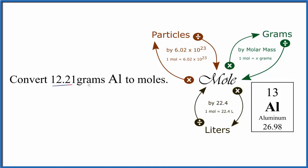We have 12.21 grams of aluminum. This is just a number I made up for the problem. We want to get that to moles. So when we have grams, we'll go from grams to moles.